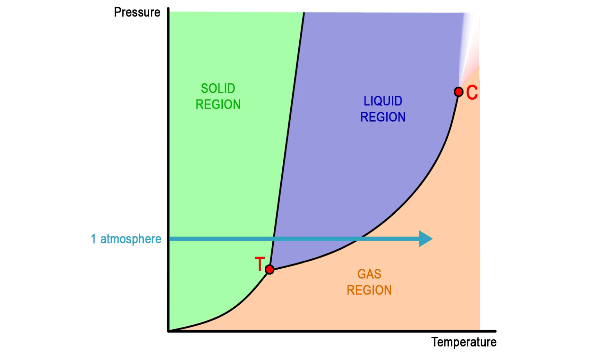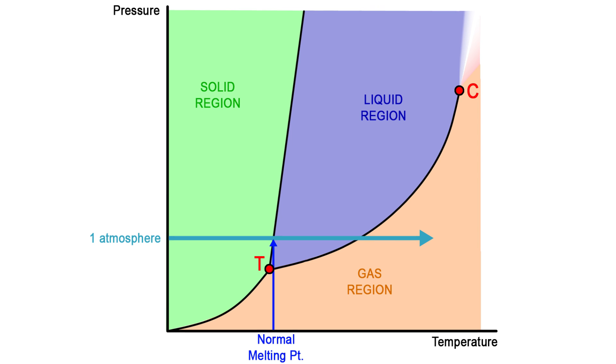We often think only of the phases that exist at one atmospheric pressure on the surface of Earth. The values of temperature on the solid-liquid curve and the liquid-gas curve define the melting and boiling temperatures.